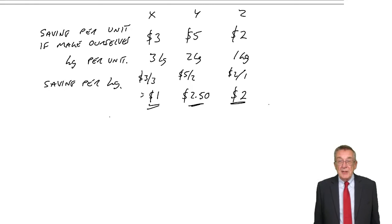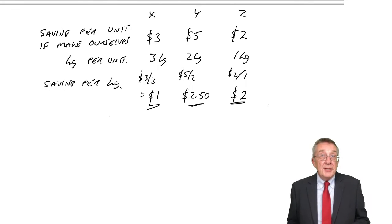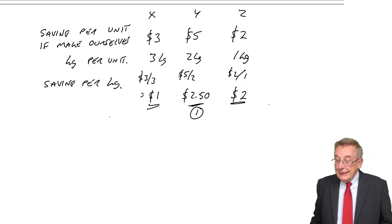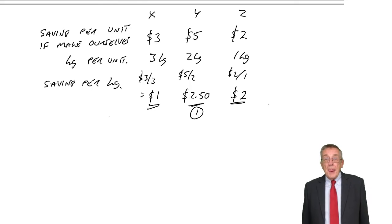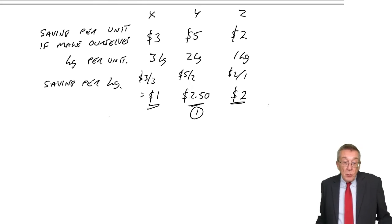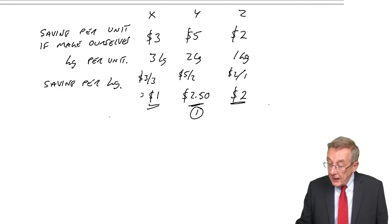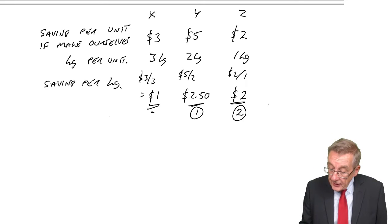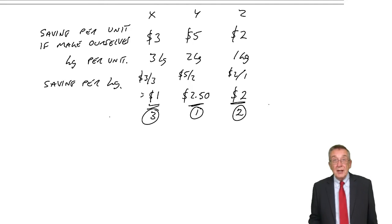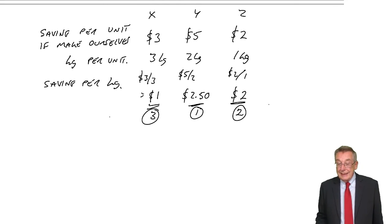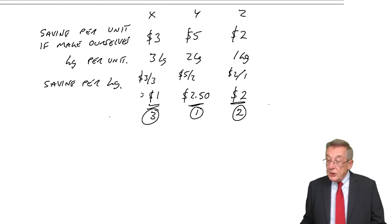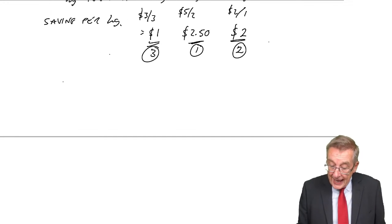So, they're the savings we'd make by making it ourselves. So, which would we prefer to make ourselves most? Y. Because every kilo that we've got, that we use to make Y, will give us the biggest saving. Which would be second best to make ourselves? Z, at $2. Third best, X, at $1. And so, how many units of each should we make? We prefer to make Y.